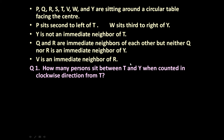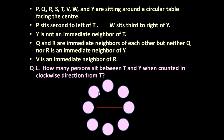Let us analyze this given information. 8 persons are sitting around a circle facing the center. Let us go statement-wise. P sits second to the left of T. If we imagine T is here, this is the right side of T and this is the left side of T. It means P will occupy this position because T is facing the center — so this will be the left and this will be the right of T.